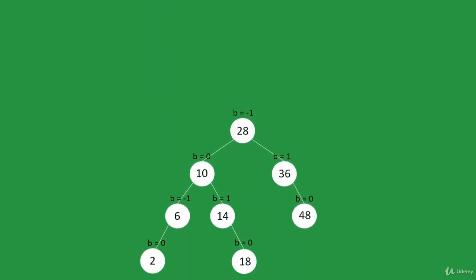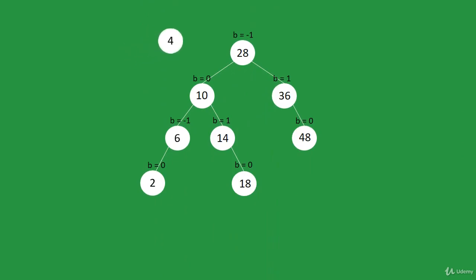Let's add 4. 4 will end up as a right child of 2, and since it is a leaf, the balance factor will be equal to 0.